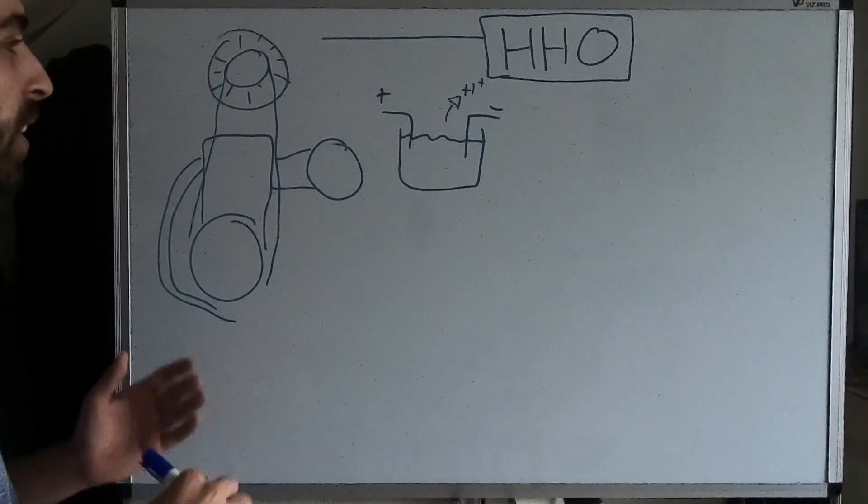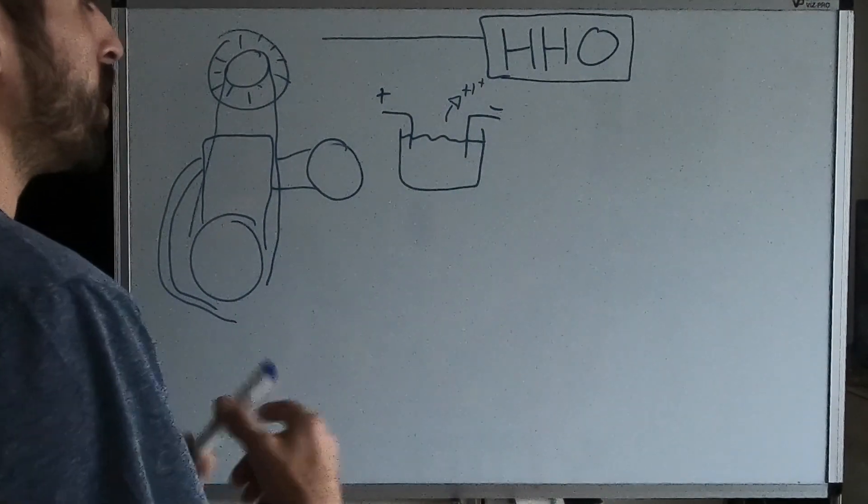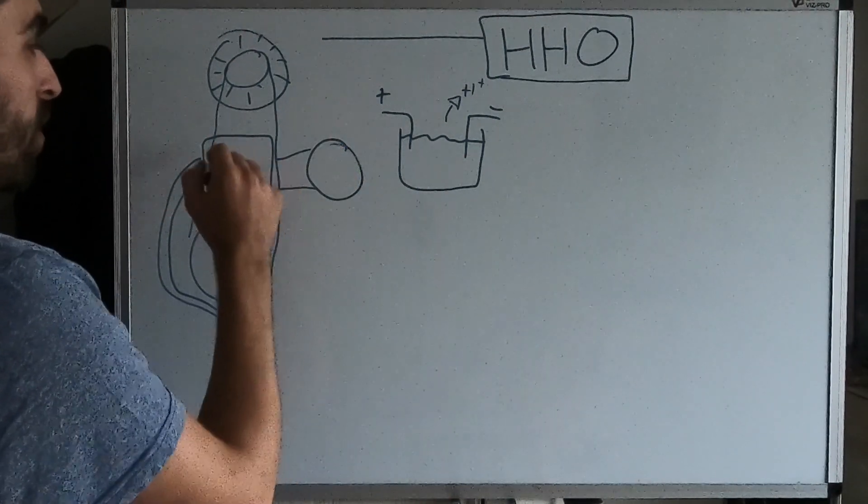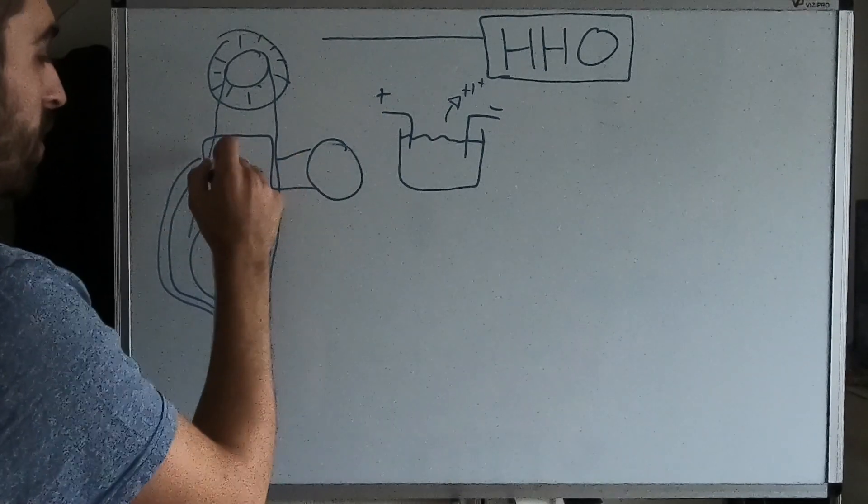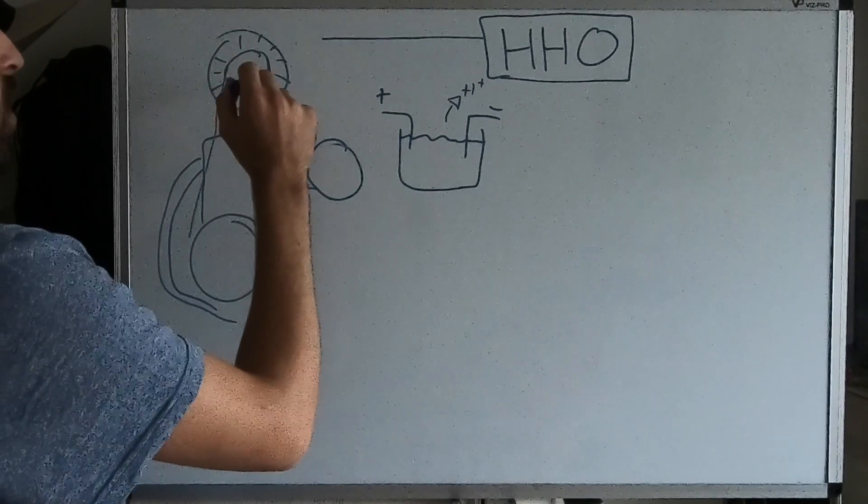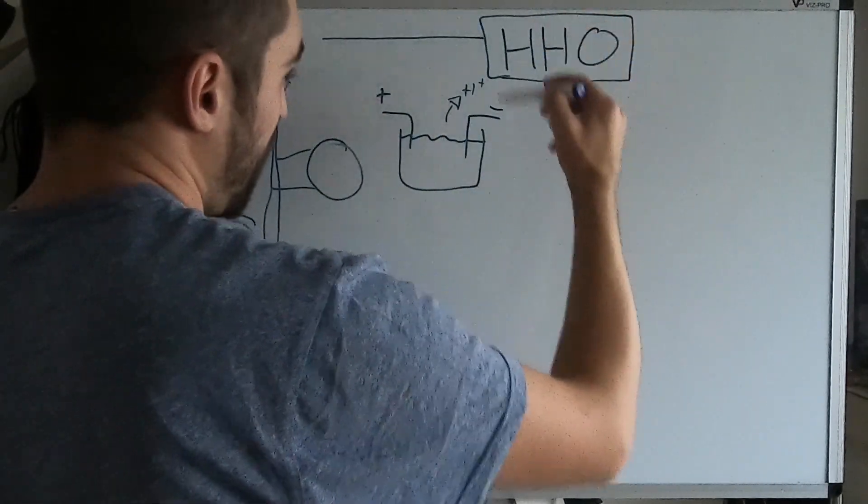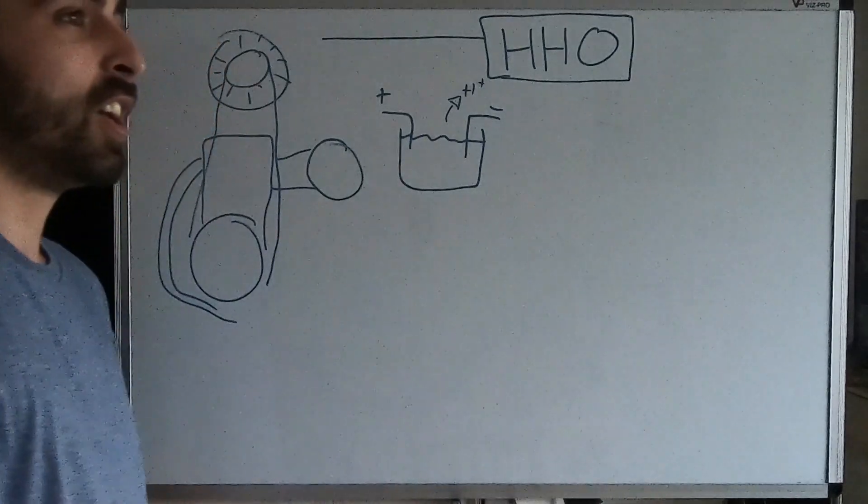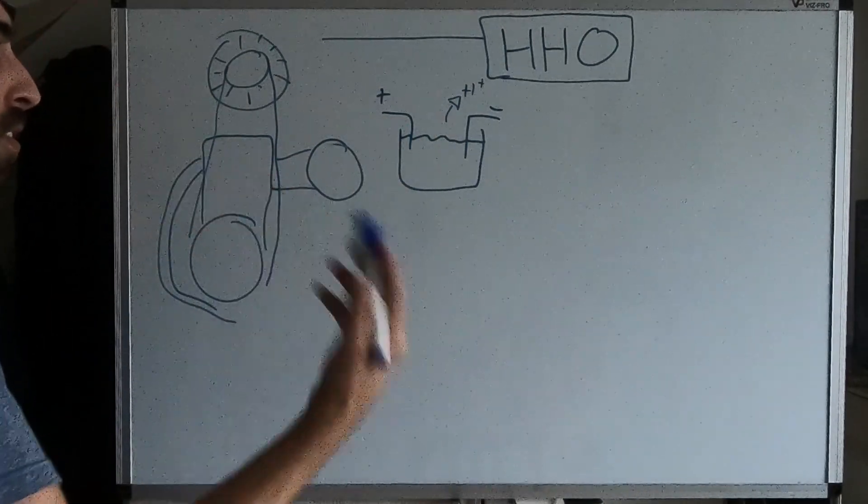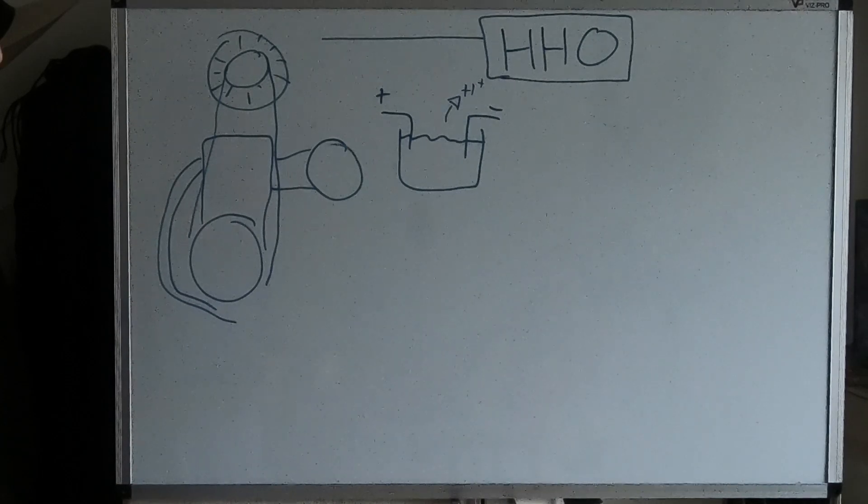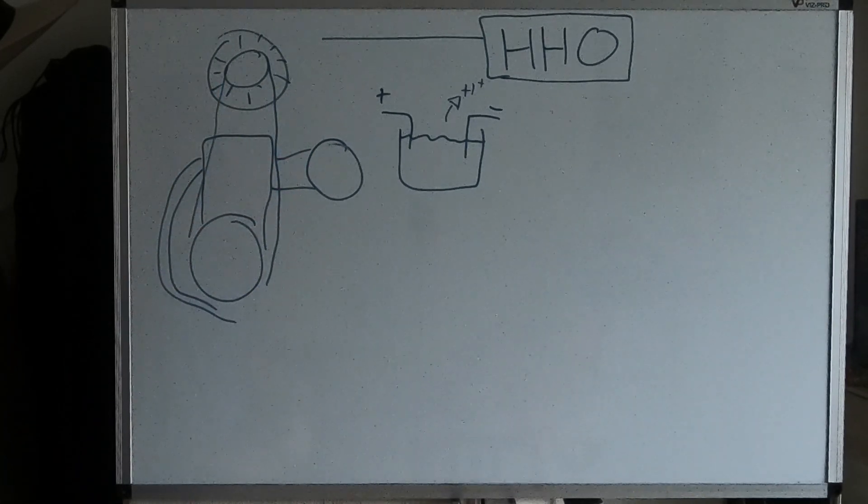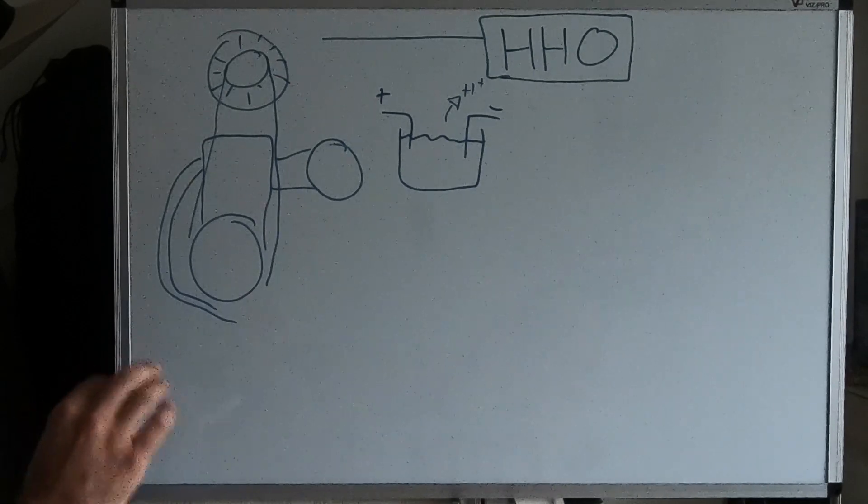Which transforms that kinetic energy into electricity and sends it back to the generator. Well, there's a little thing called the first law of thermodynamics that says that every single time that there's a conversion of energy, going from chemical energy from the fuel into pressure and heat, then into kinetic energy, then from kinetic energy back into electrical energy.